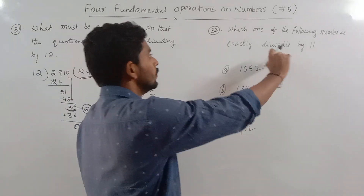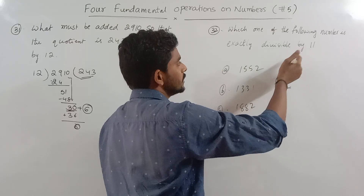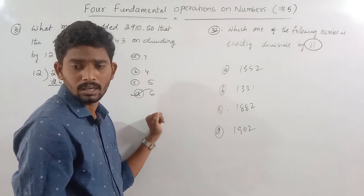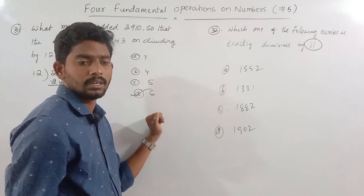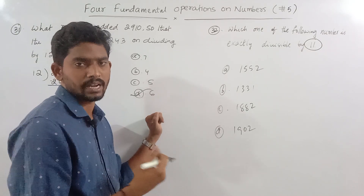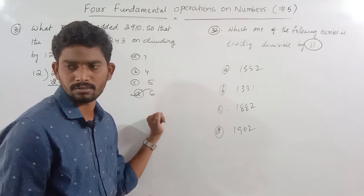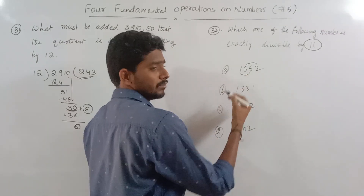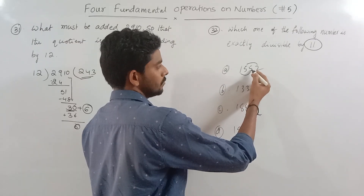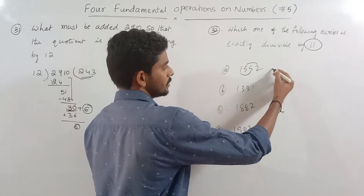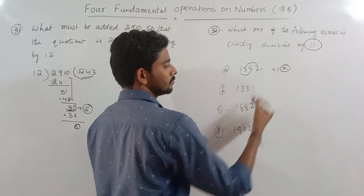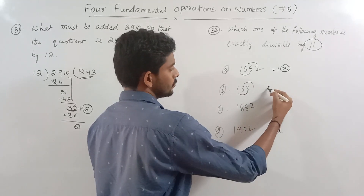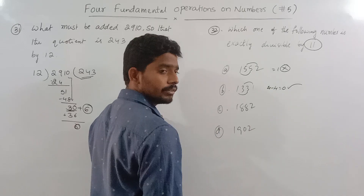Which one of the following numbers is exactly divisible by 11? The divisibility rule for 11: add the digits at odd places, add the digits at even places, find the difference. For example: 2 plus 5 is 7, minus 5 plus 1 is 6, and 7 minus 6 is 1. Then 3 plus 1 is 4, and 4 minus 4 is 0, so this number is divisible.